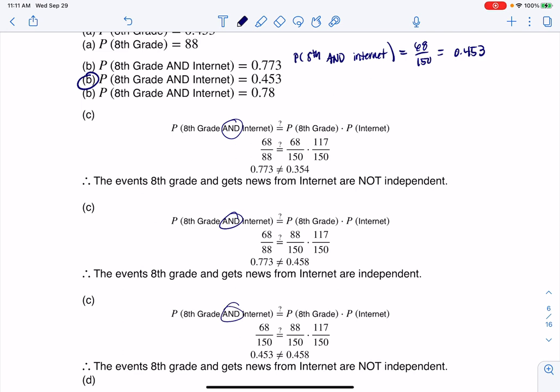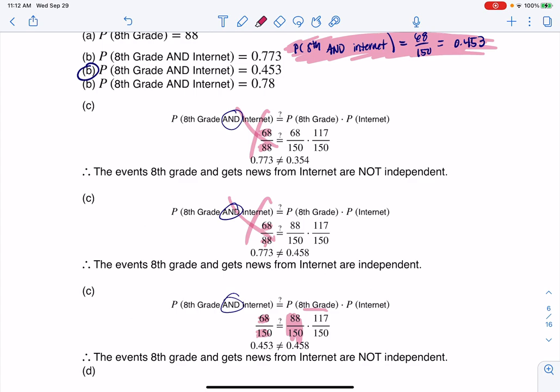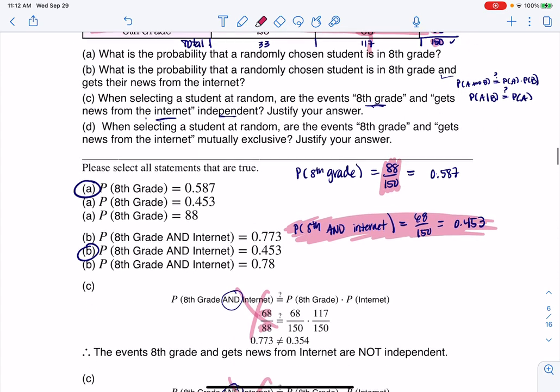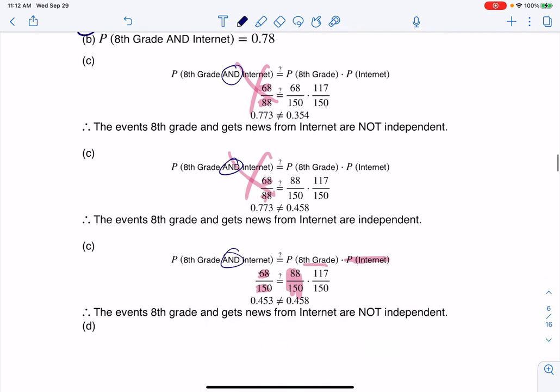I already have the AND here, so the left side of that equation needs to be 68 out of 150. I can see 68 out of 88 - not the answer. 68 out of 80 - not the answer. Here's 68 out of 150 - that's looking good. The probability of eighth graders was 88 out of 150, so that's consistent. Let me check probability of internet - we had 117 out of 150. Let me scroll back down and there it is, 117 out of 150.